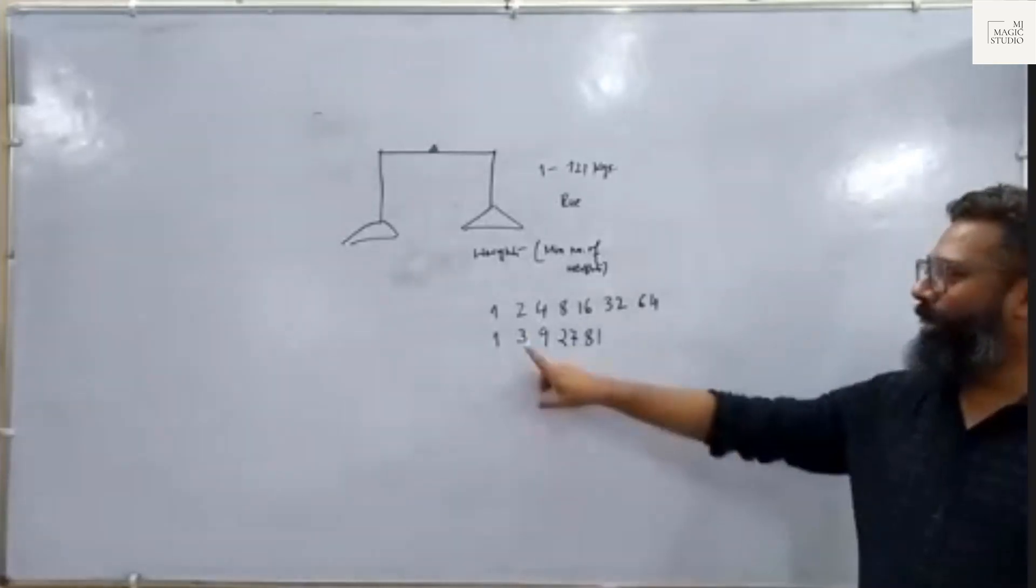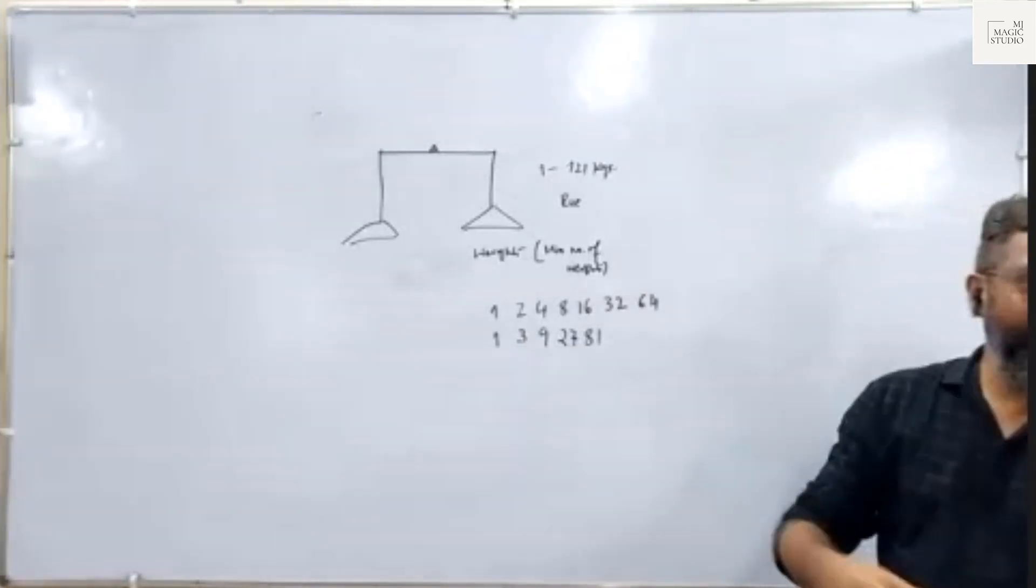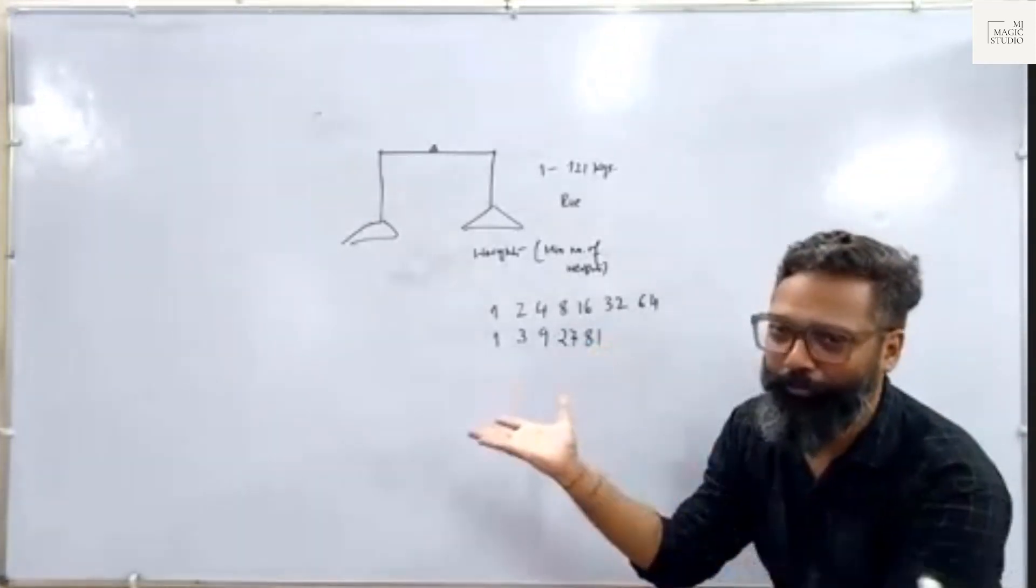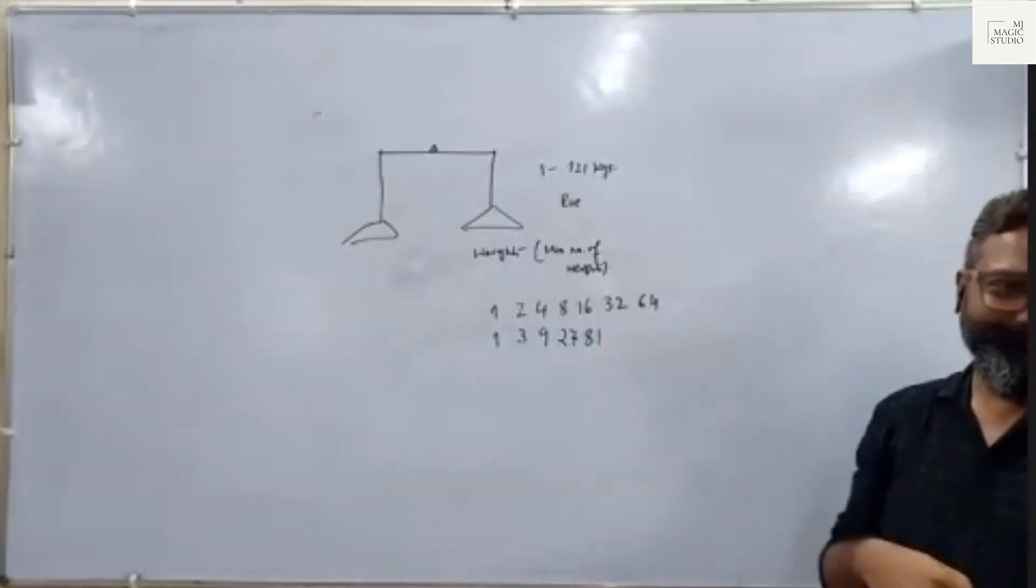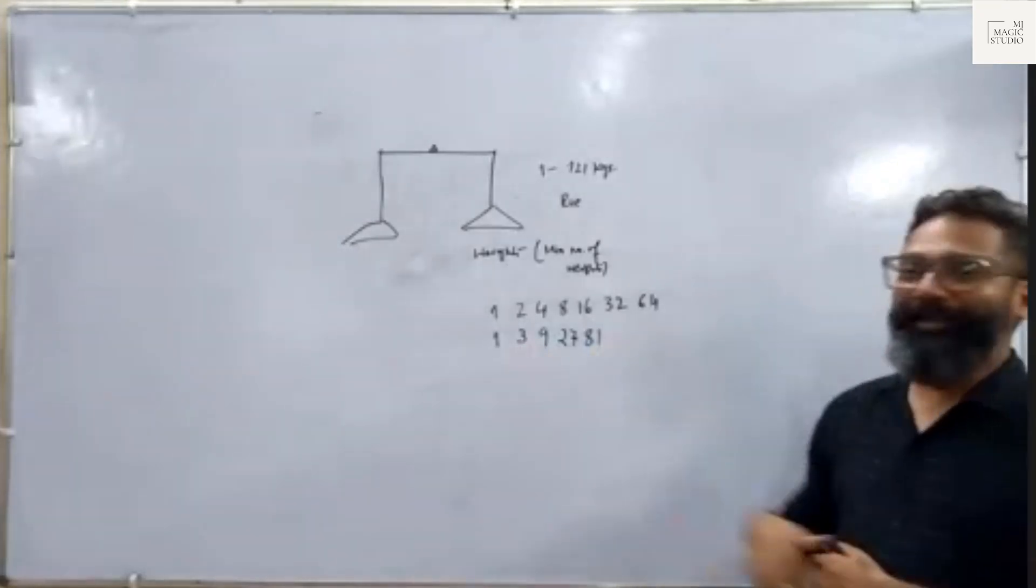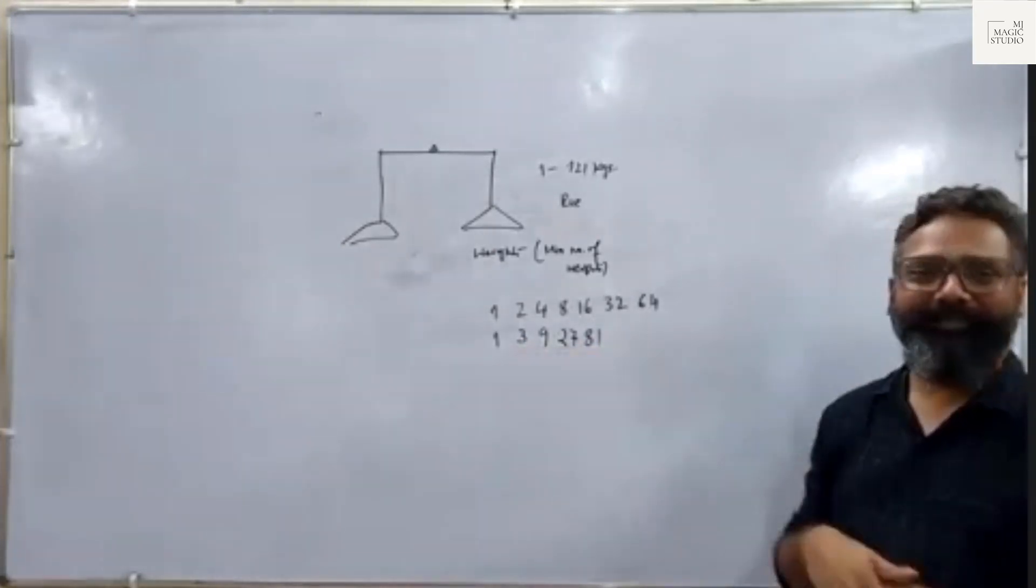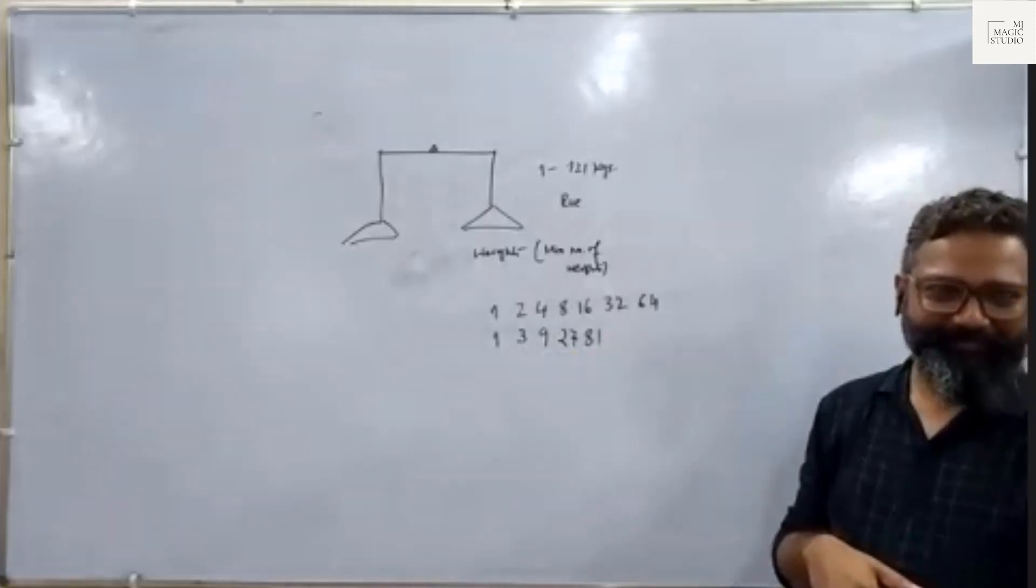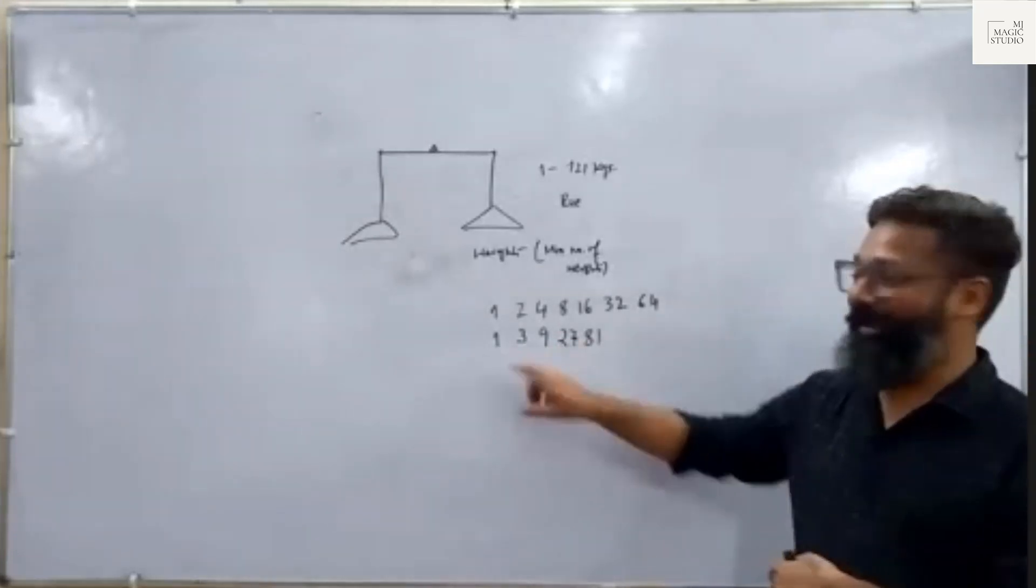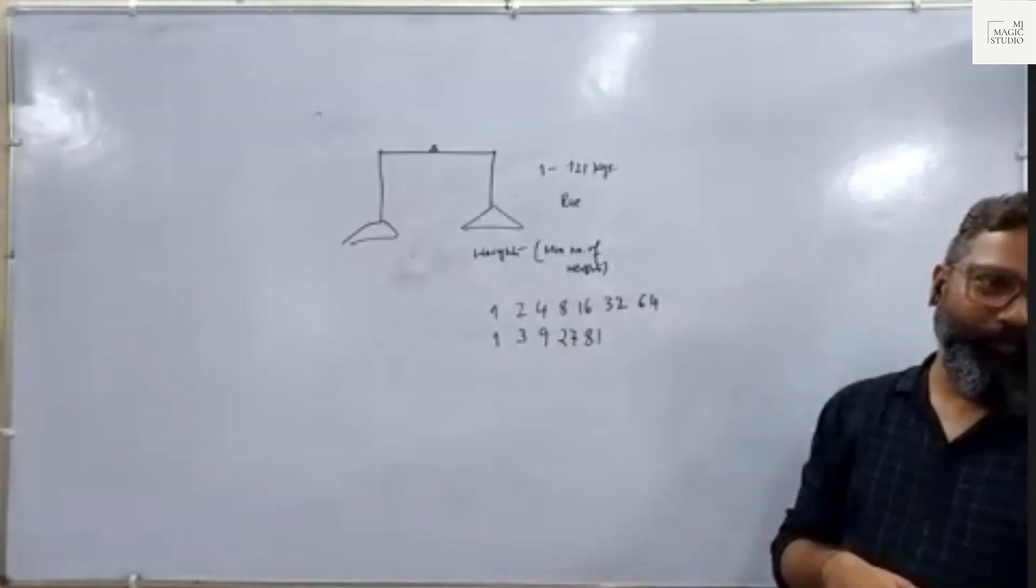You want to weigh 2? I will keep 3 kg here, 1 kg here, it will become 2. Weigh 3? Weigh 4? Weigh 5? Weigh 6? Weigh 7? 10 minus 3. Weigh 8? 9 minus 1. Weigh 9? You can do this till 121.